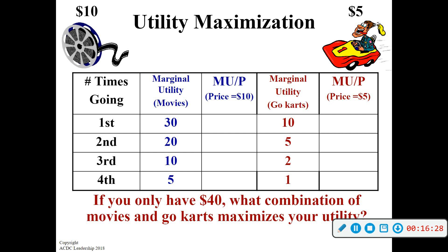What we do is go down and determine the marginal utility per dollar spent — it's how we get our equal comparison. The first time you go to the movies, it's going to give you 30 utils, and every time you go to the movies it's going to cost you $10. So what would be the utility per dollar spent? Three — you divide 30 by 10. That's all you're doing: taking the utility and dividing it by the price, and that gives you the utility per dollar spent, or how much happiness you're going to get for every dollar you spend.